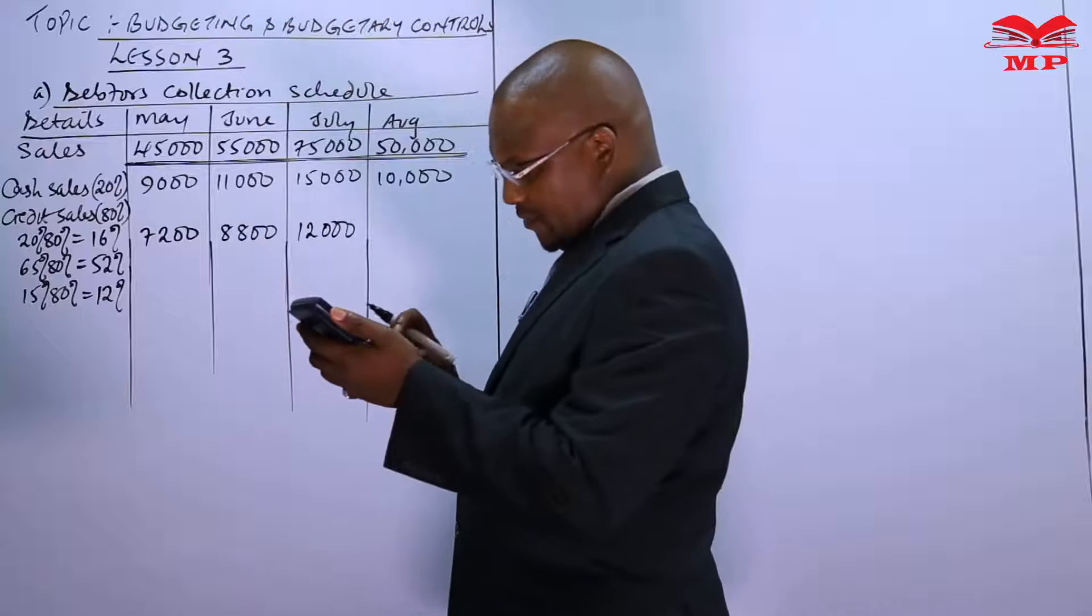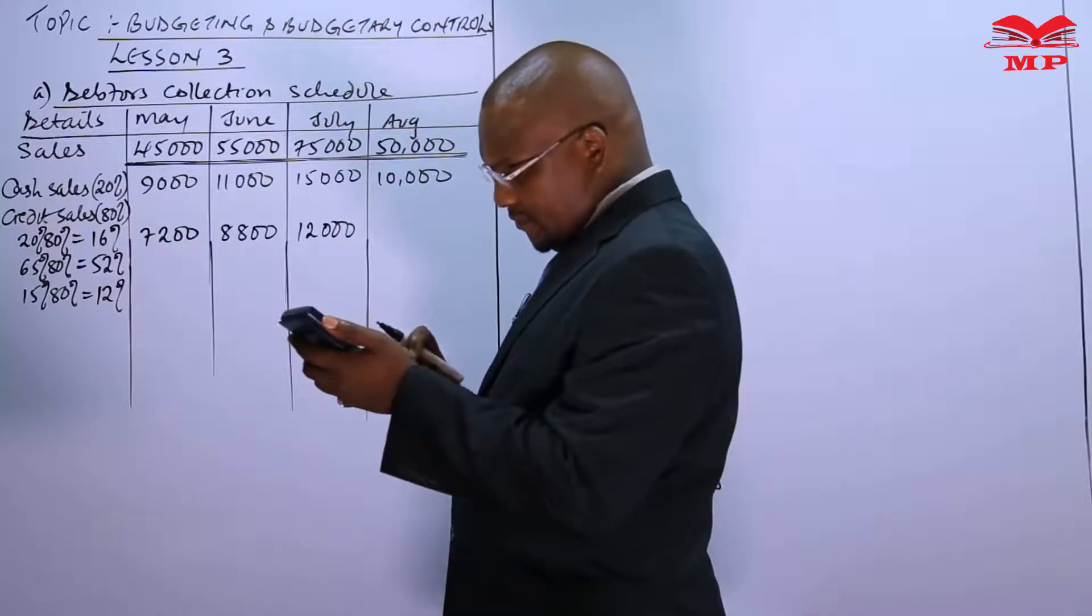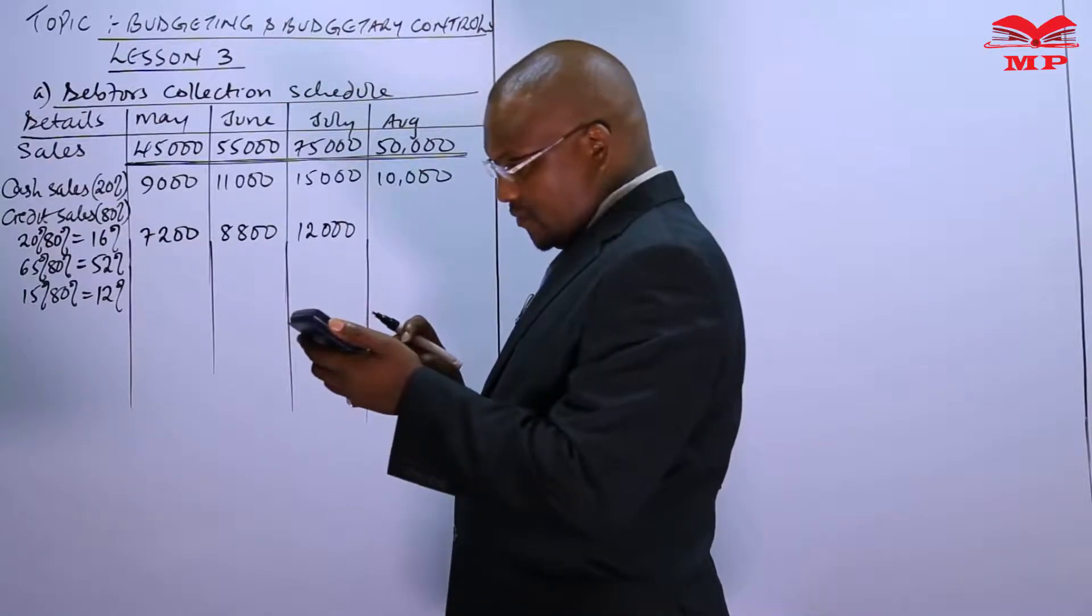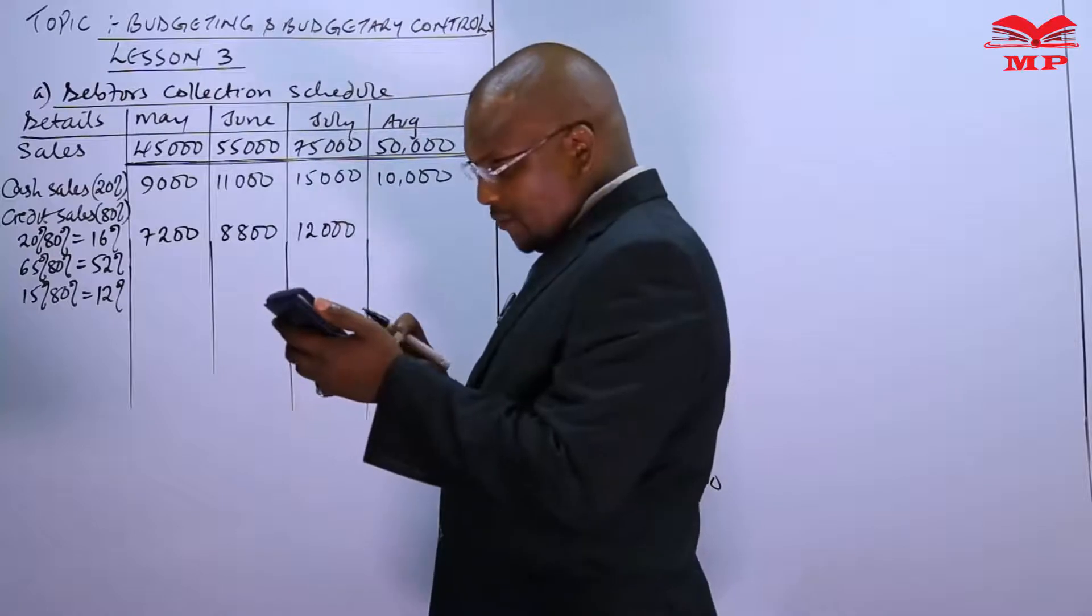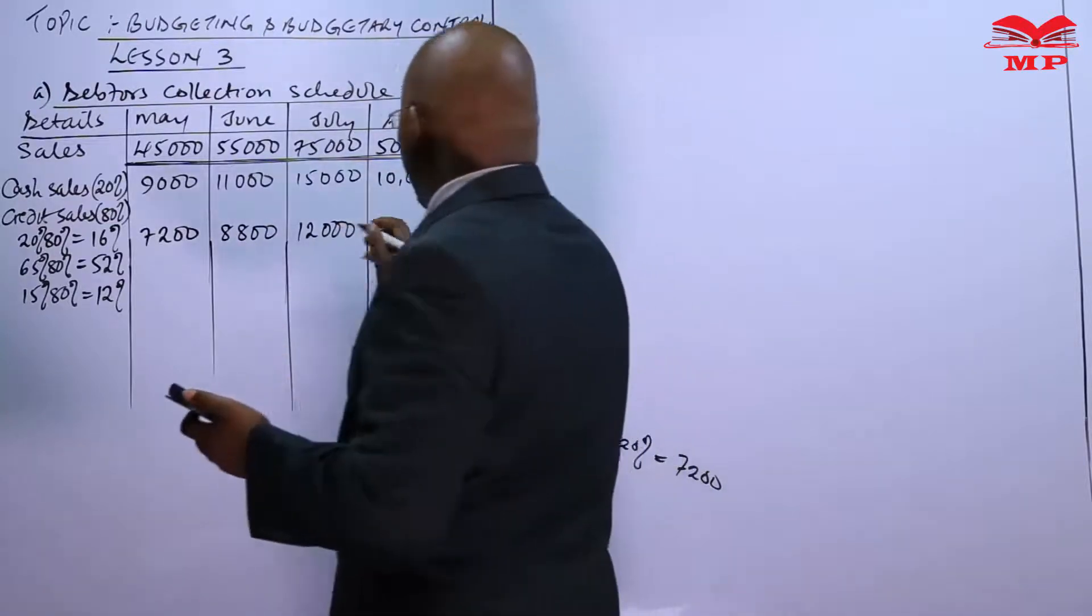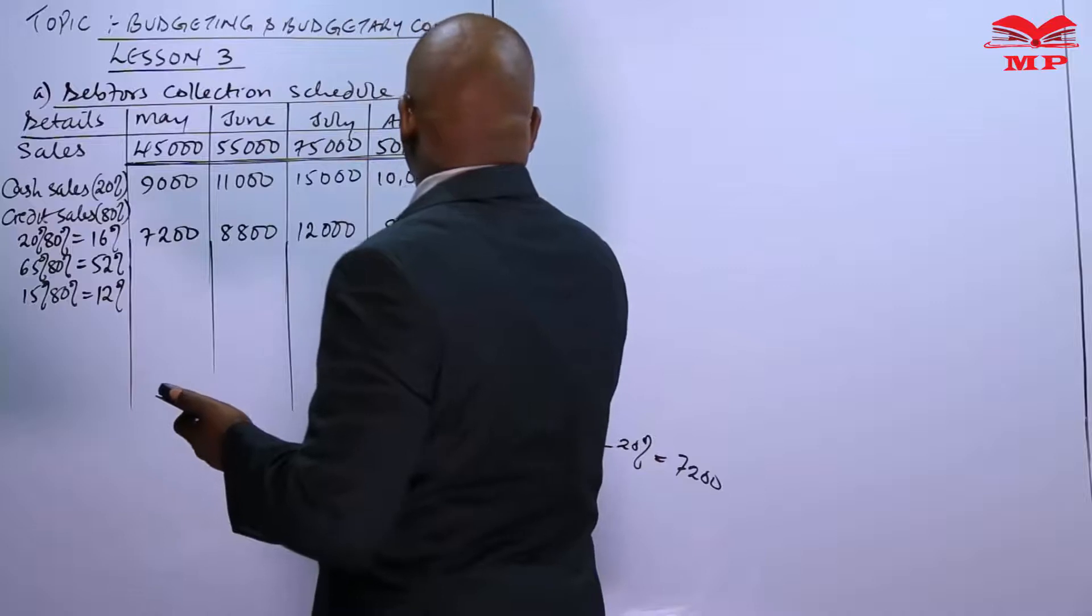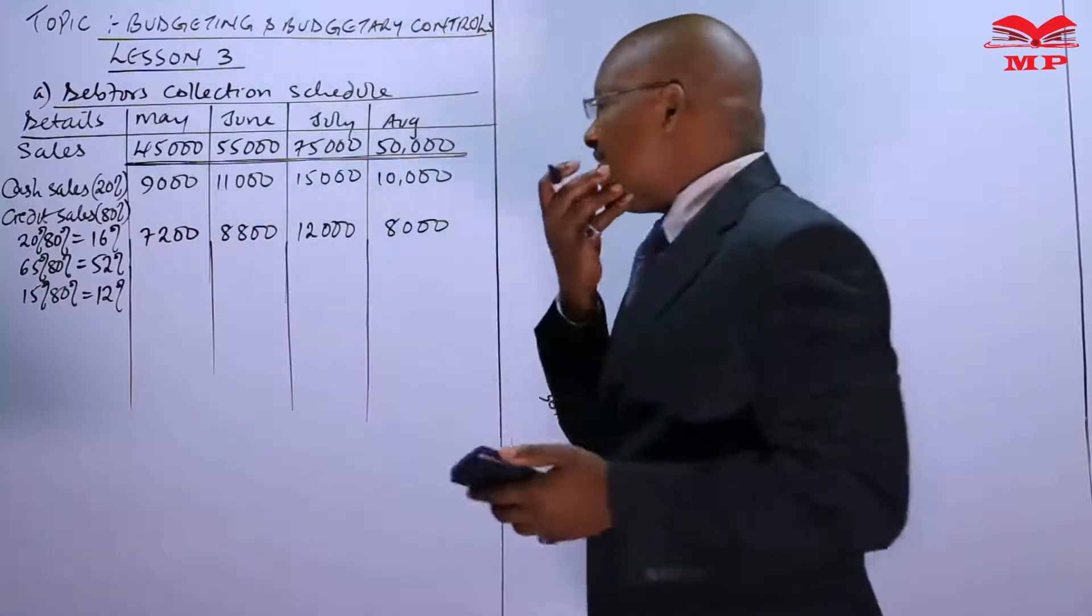Then 0.16 times the 50,000 for the month of August, this is 8,000 collected in the same month.